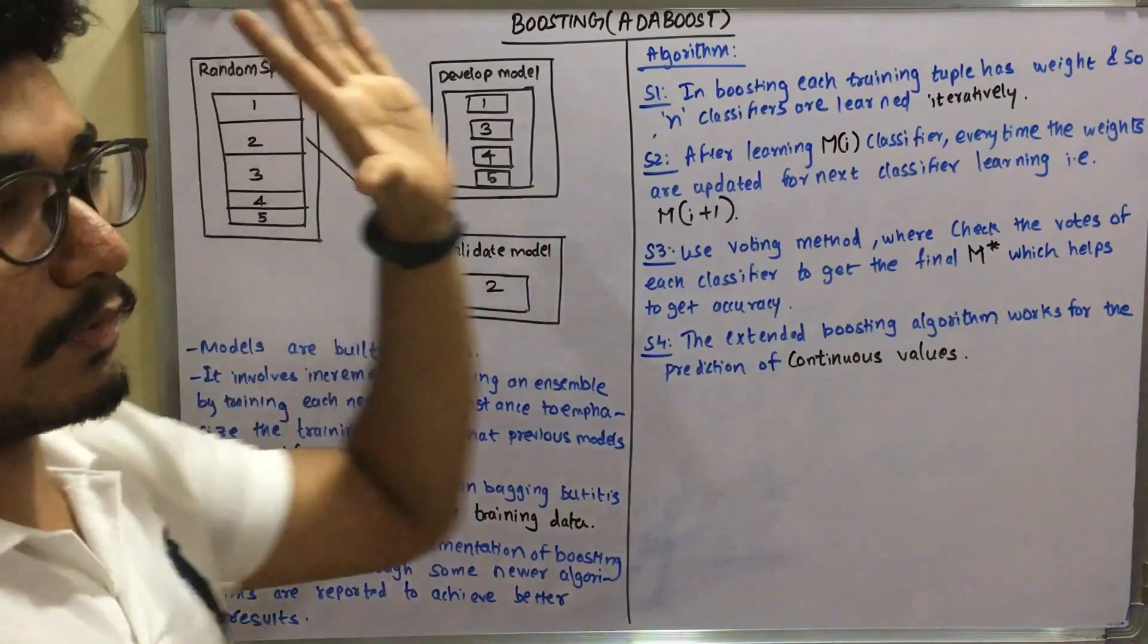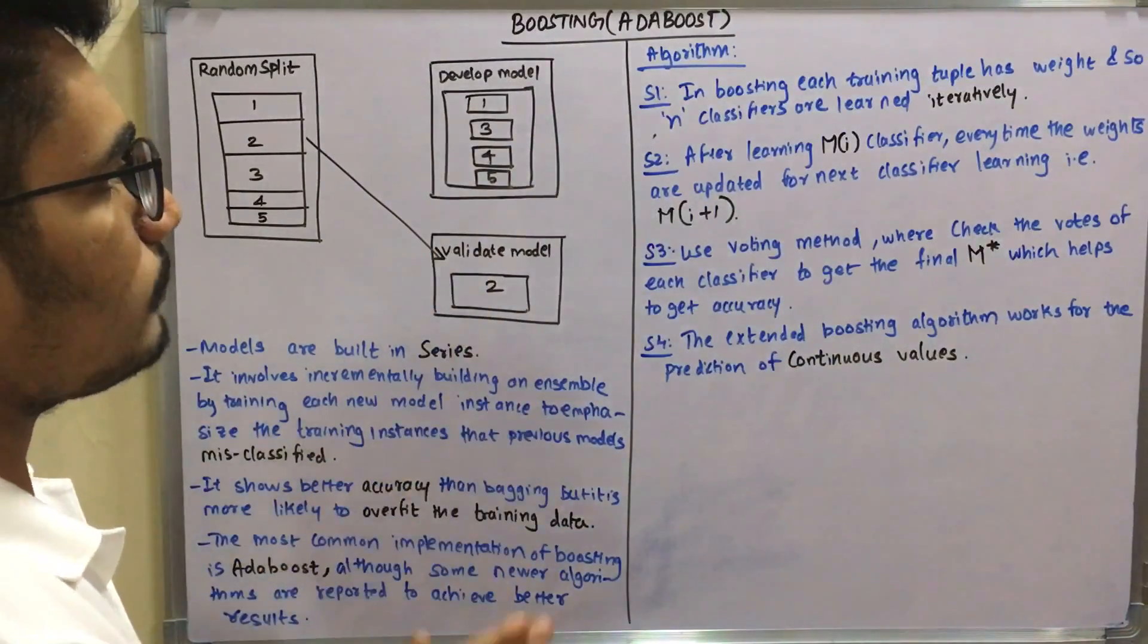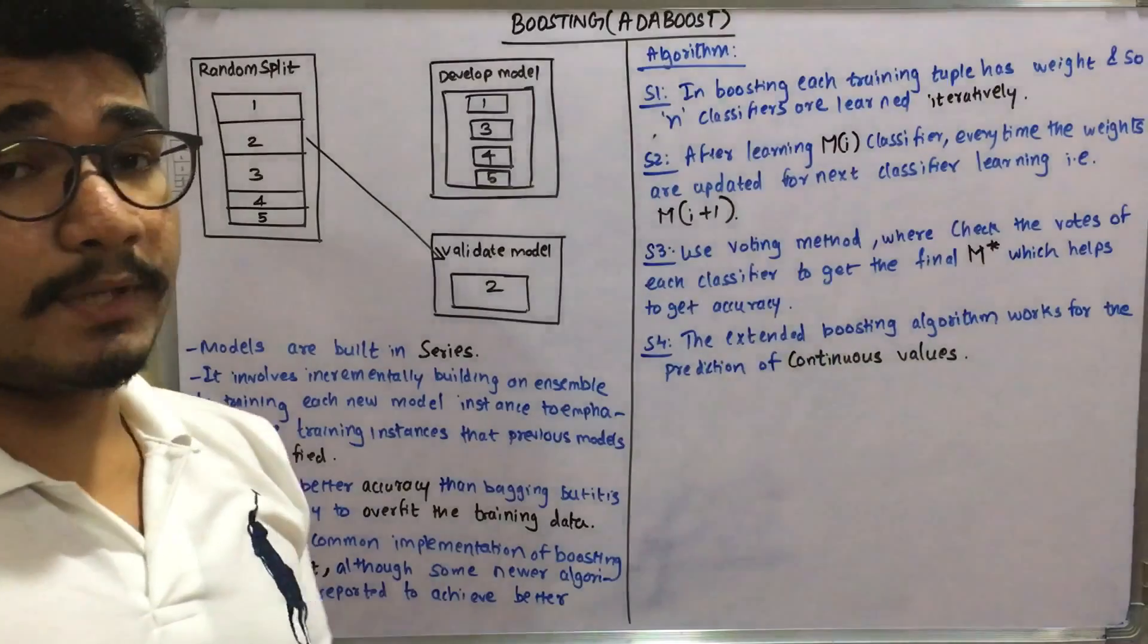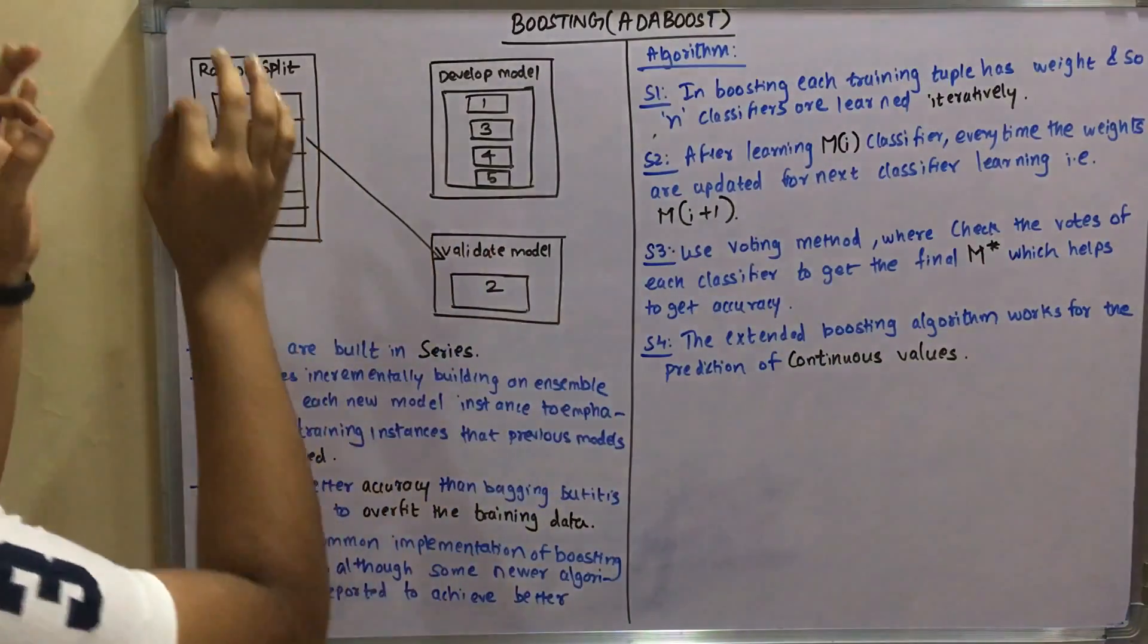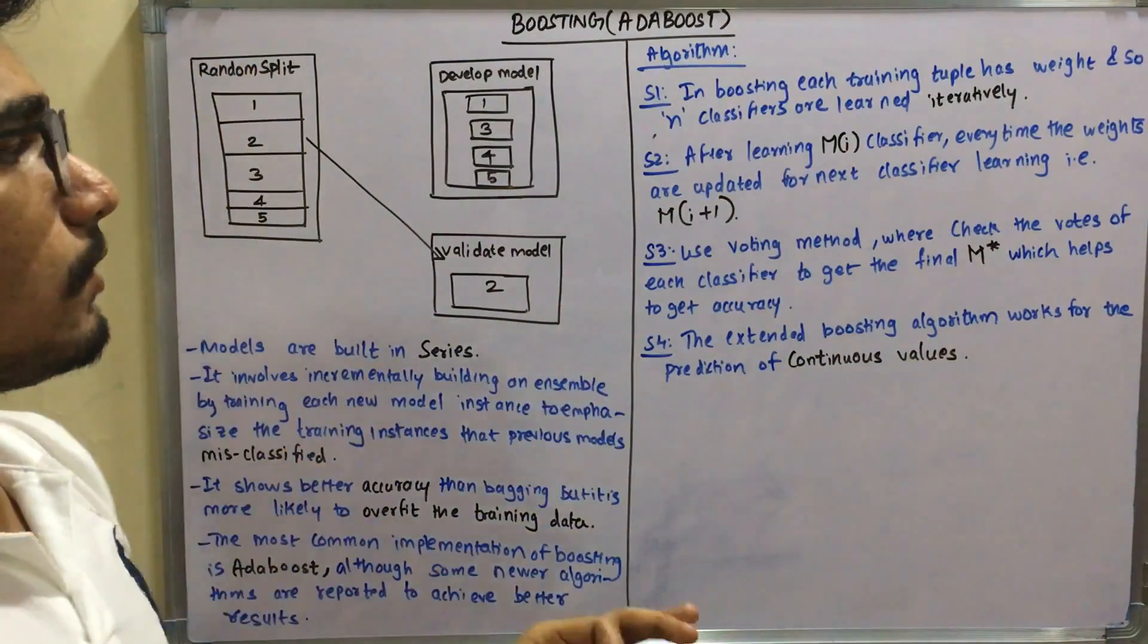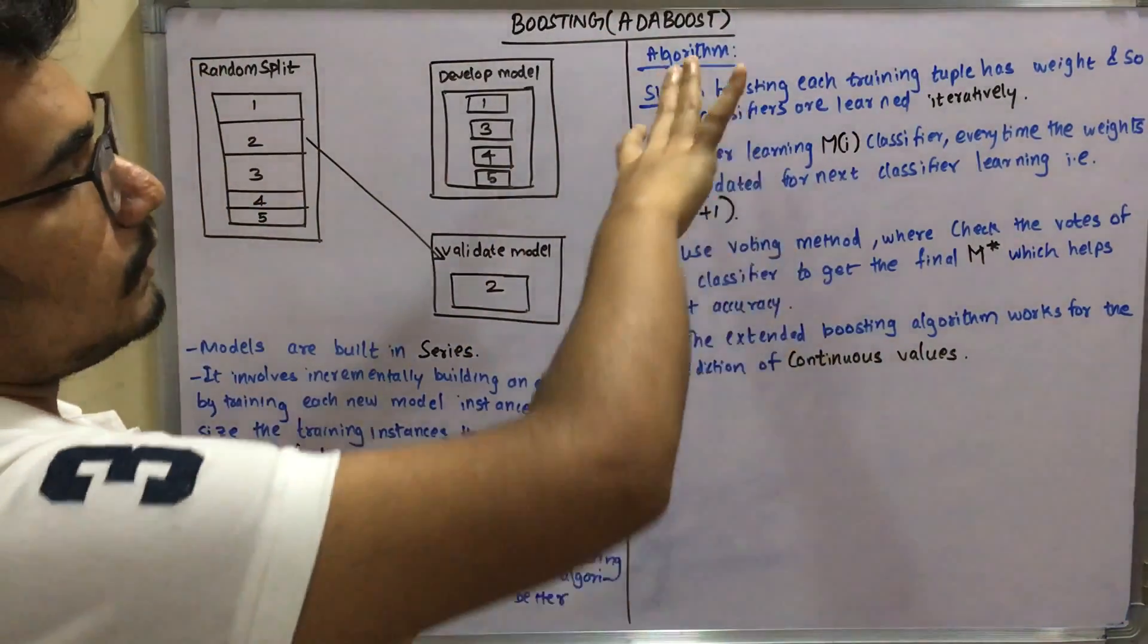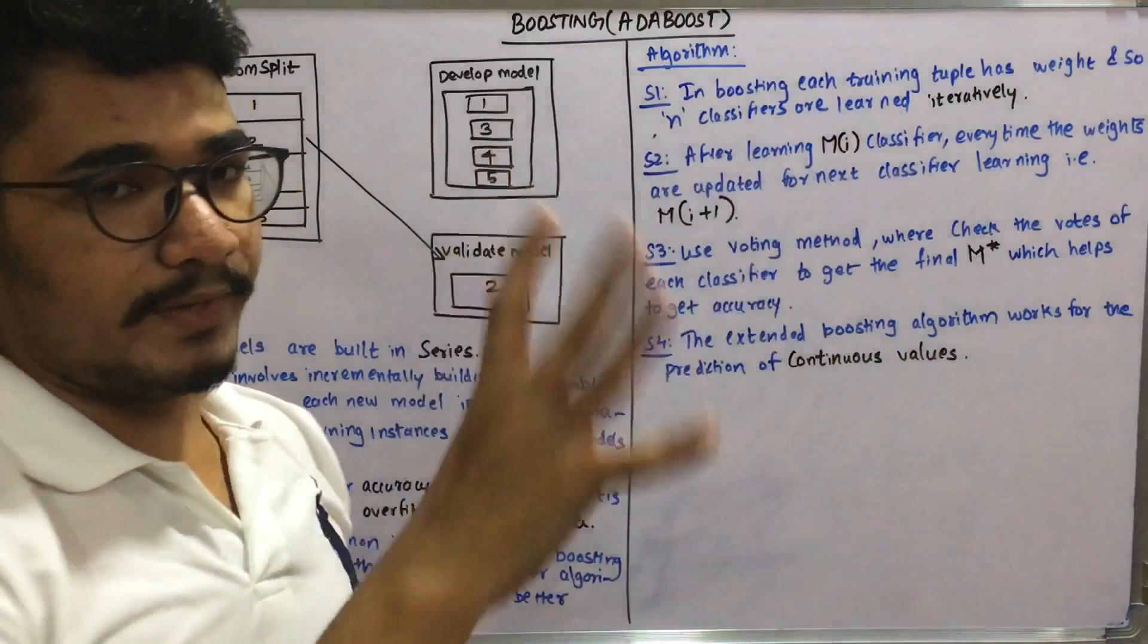Let's move on to the algorithm. The algorithm is very easy with four steps. At the very first step in boosting, each training tuple has weight. Like you have one weight, two, three, four, five - likewise n number of weights, and n classifiers are learned iteratively.